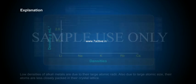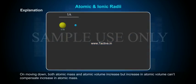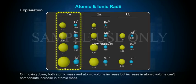Explanation. Low densities of alkali metals are due to their large atomic radii. Also due to large atomic size, their atoms are less closely packed in their crystal lattice. On moving down, both atomic mass and atomic volume increase, but increase in atomic volume can't compensate increase in atomic mass.